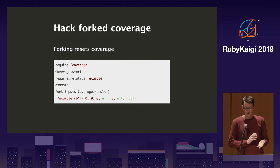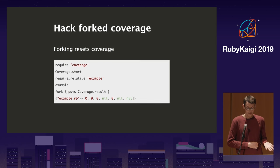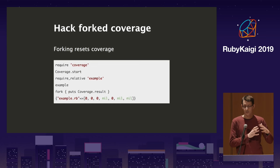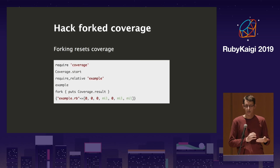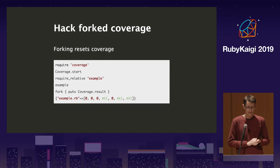The problem with forking and coverage is that forking resets your coverage count. Forking just wipes everything. Inside your fork, you can't redo all your requires to get the coverage of methods being defined again, because you can only require once — you'd have to monkey-patch to force requires to execute twice, which is not a nice thing to do. So basically we want to inherit the coverage from the parent into the child.